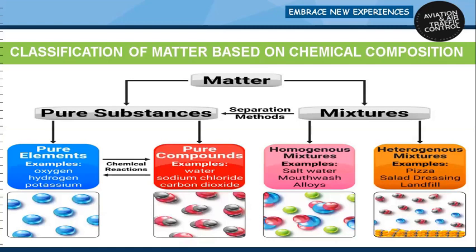Classification of matter based on chemical composition: mixtures, compounds, and elements. An element is a substance which cannot by any known chemical process be split into two or more chemically simpler substances; examples are hydrogen, oxygen, copper, iron, and carbon. A compound is a substance which contains two or more elements joined chemically together; examples include hydrogen and oxygen in water, and sodium and chlorine in salt. A mixture is a combination of elements or compounds brought together by a physical process; examples are salt and sand, and carbon and iron filings.